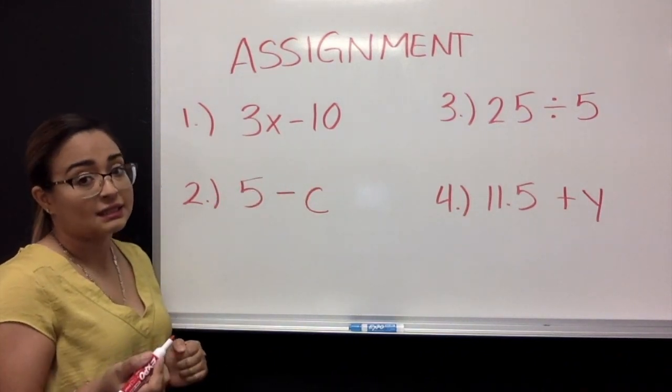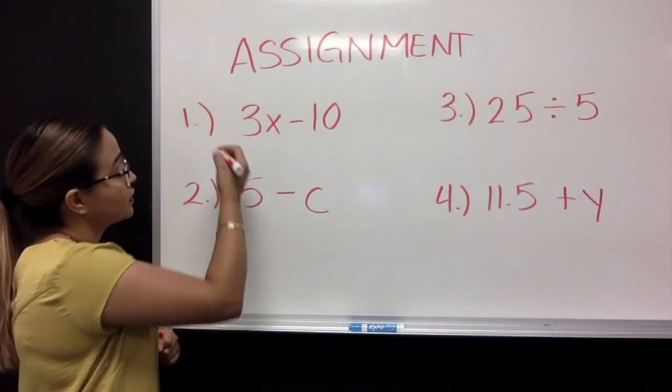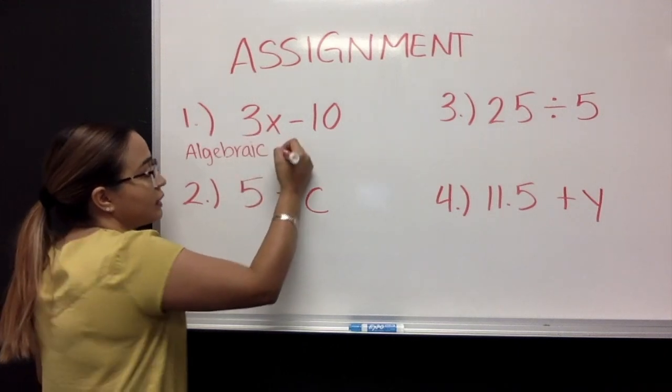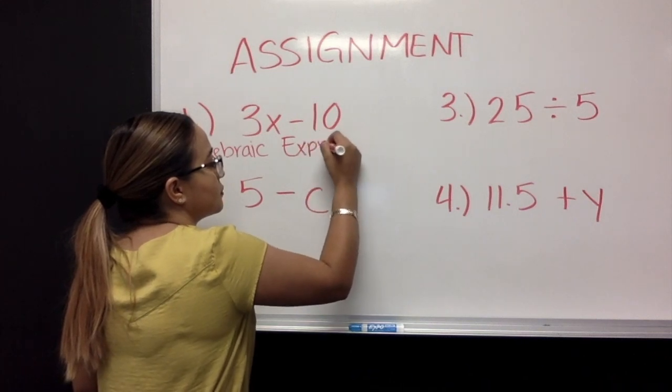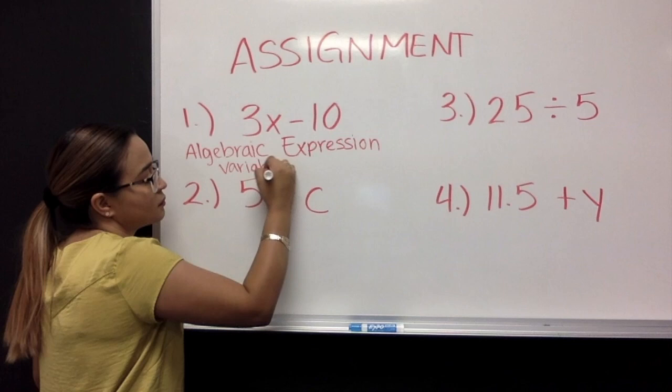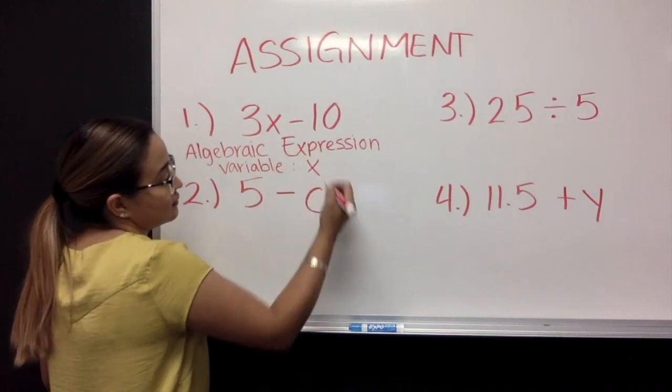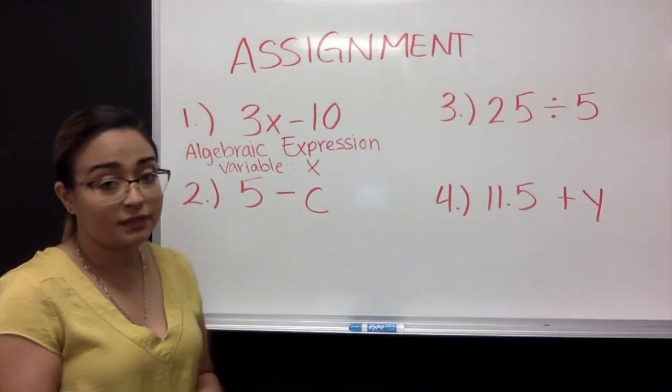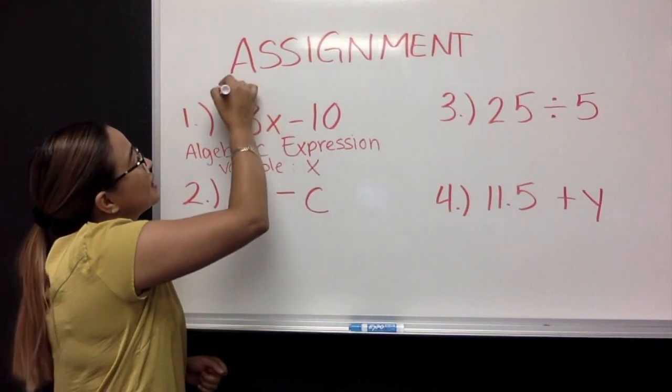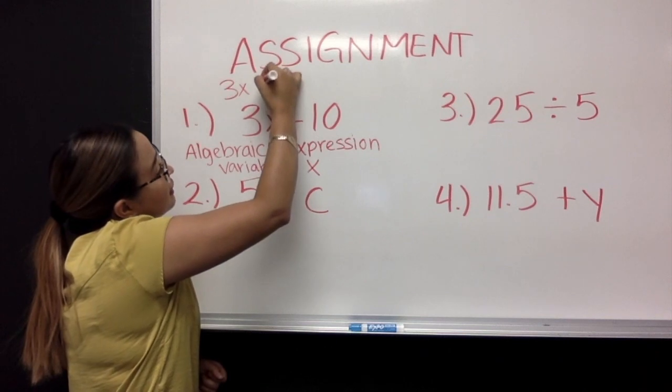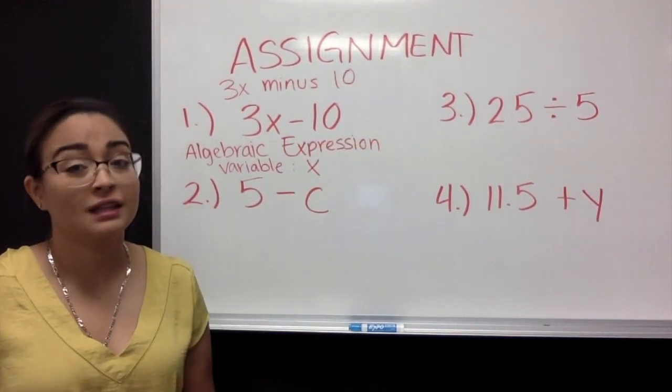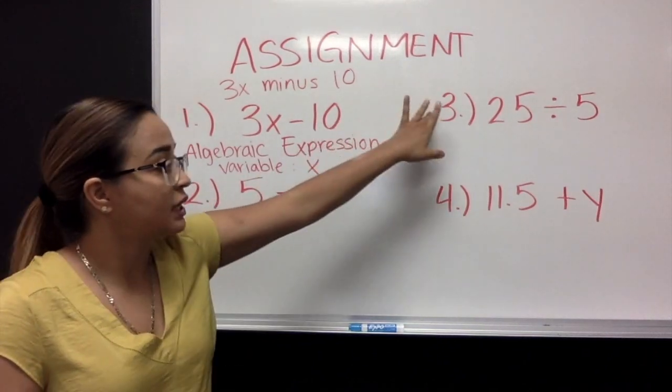3x minus 10. 3x minus 10 is an algebraic expression. Why? Because it has a variable. So, we would write algebraic expression. This is an algebraic expression. The variable is x. Because that is a variable. And the word this algebraic expression in a word phrase. 3x minus 10. That is how I want you to answer number two, number three, and number four.